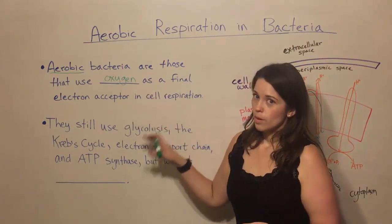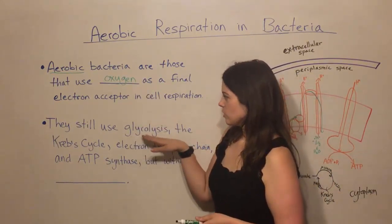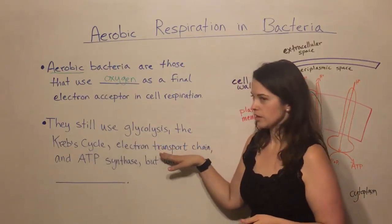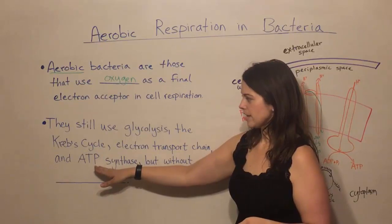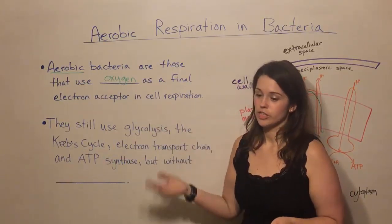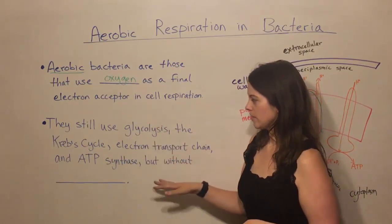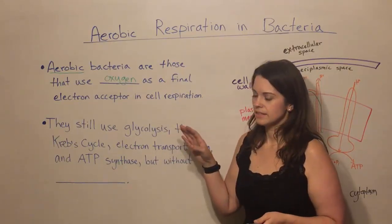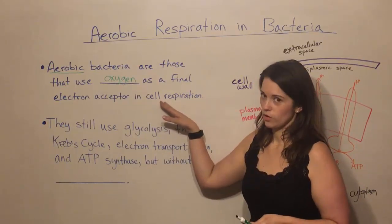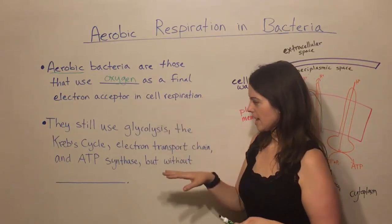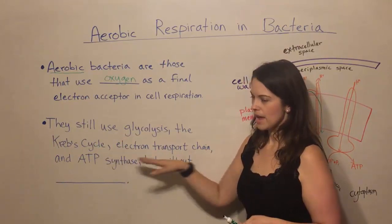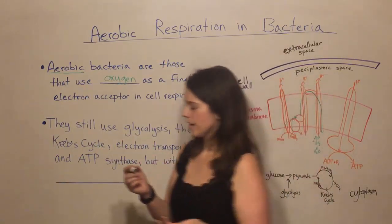Now with these aerobic bacteria, they still use glycolysis. They still use the Krebs cycle. They still use an electron transport chain. They still use ATP synthase. If you know about aerobic respiration in animals, you should recognize all of these things. The main difference for these bacteria is that they carry out these different aspects without mitochondria.